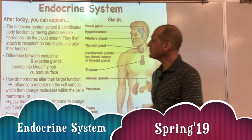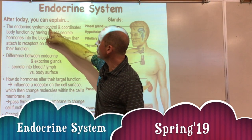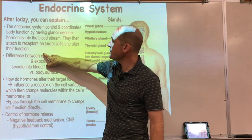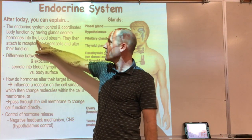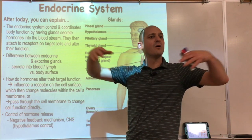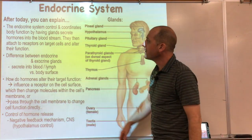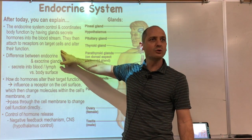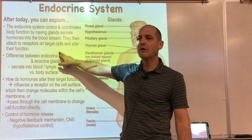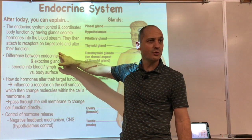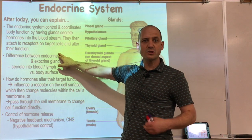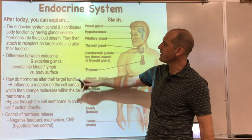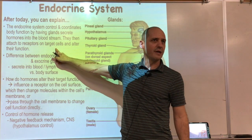The endocrine system controls and coordinates body functions through glands that secrete hormones — chemicals released into the bloodstream — which are distributed throughout the body. These hormones find receptors on cells that then alter their function. For example, when you eat a sugary meal and have a lot of sugar in the bloodstream, the pancreas secretes insulin, which tells the body's cells to take the glucose in.